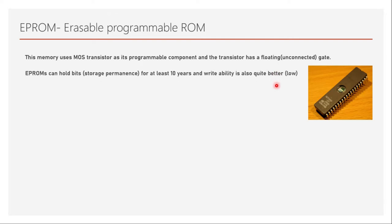It is not a traditional MOS transistor. EEPROMs can hold bits for at least 10 years, so it has better storage permanence compared to other types, but a little worse compared to ROM and PROM which almost never lose bits. Writability is comparably much better than that of PROM or mask programmed ROM because these can be erased and programmed multiple times — to the level of thousands of times. The speed of writing is much slower than that of reading, and it has medium endurance.